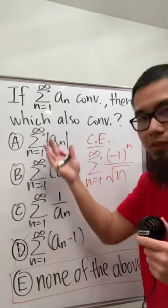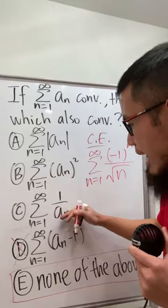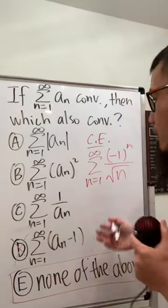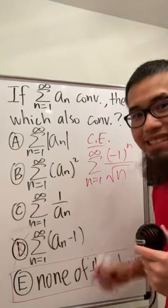Go ahead and verify them. This, this, and that—they will not converge. It's just a counterexample. That's it.